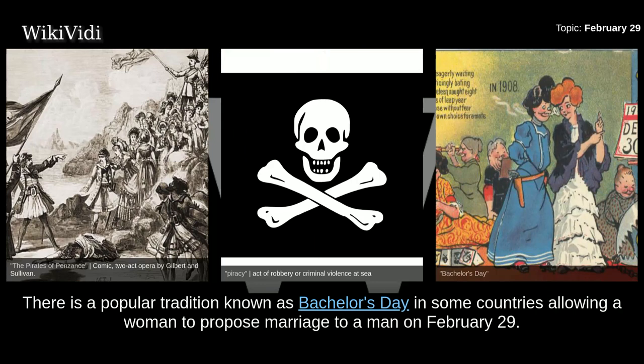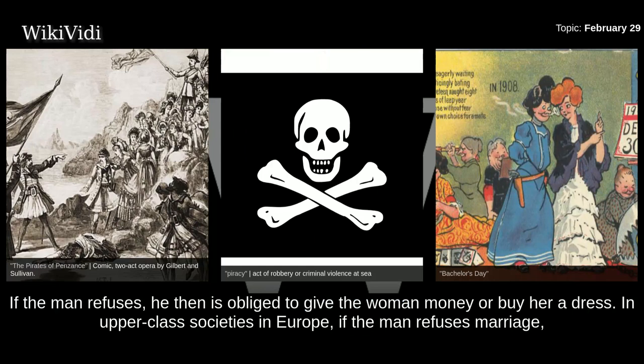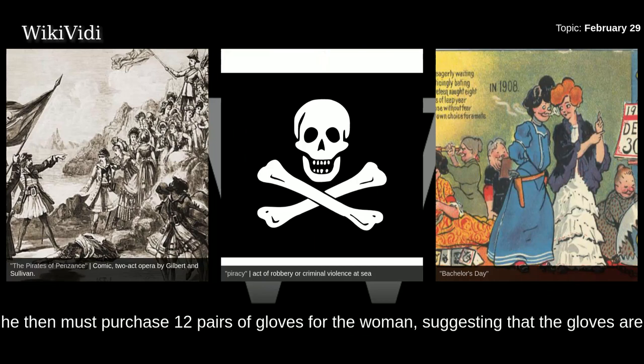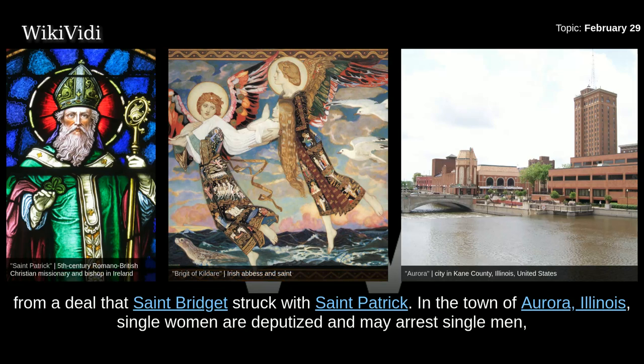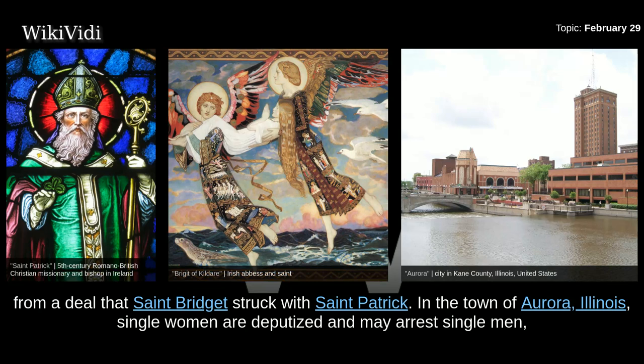There is a popular tradition known as Bachelor's Day in some countries, allowing a woman to propose marriage to a man on February 29th. If the man refuses, he is obliged to give the woman money or buy her a dress. In upper-class societies in Europe, if the man refuses marriage, he must purchase 12 pairs of gloves for the woman, suggesting the gloves are to hide the woman's embarrassment of not having an engagement ring. In Ireland, the tradition is supposed to originate from a deal that St. Brigid struck with St. Patrick. In the town of Aurora, Illinois, single women are deputized and may arrest single men, subject to a $4 fine, every February 29th. In Greece, it is considered unlucky to marry on a leap day.